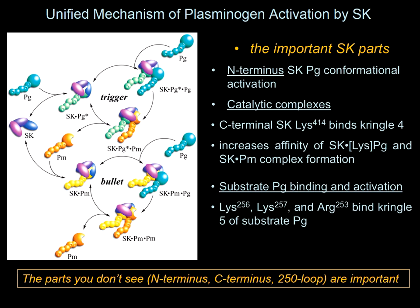The neat thing about this is that the trigger only needs to turn a couple of times to generate enough plasmin, after which it has no streptokinase left and the entire process goes through the bullet cycle. The parts you don't see in this case are the N-terminus, the C-terminus, and again the 250 loop.